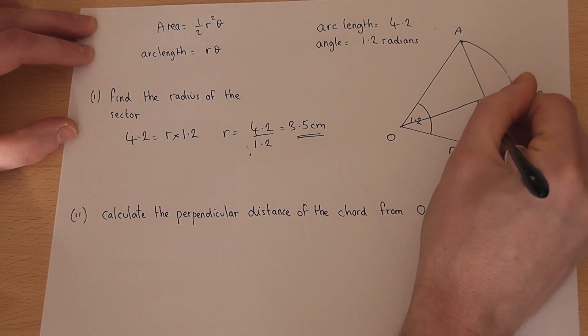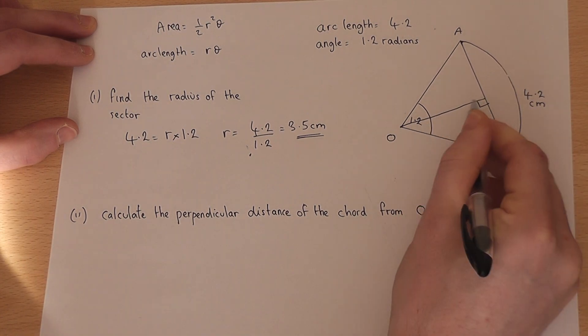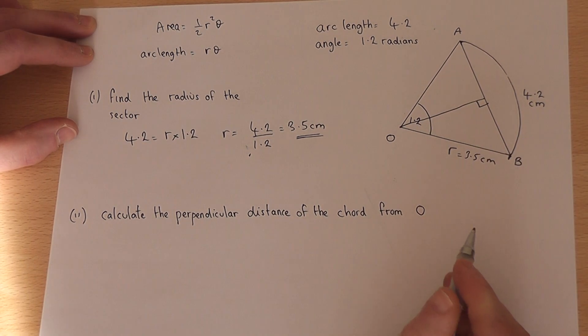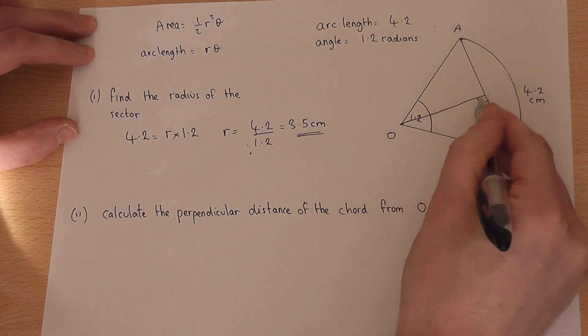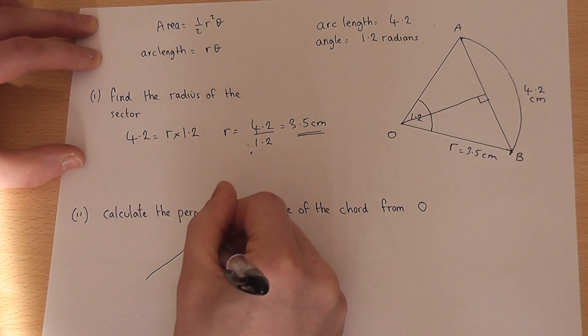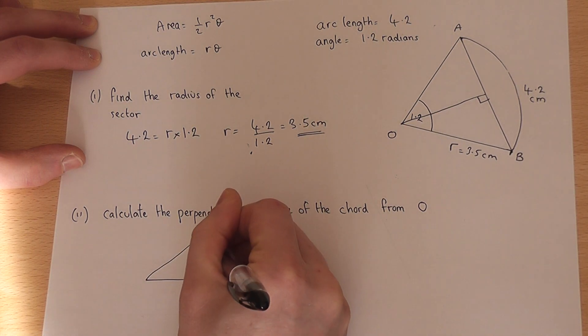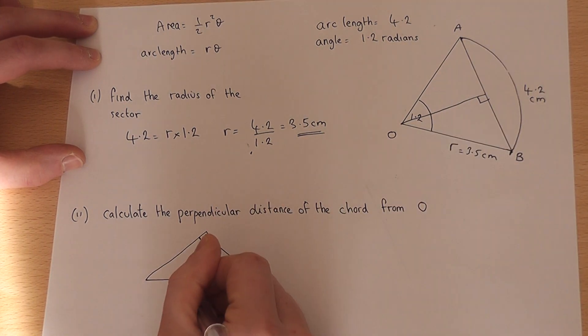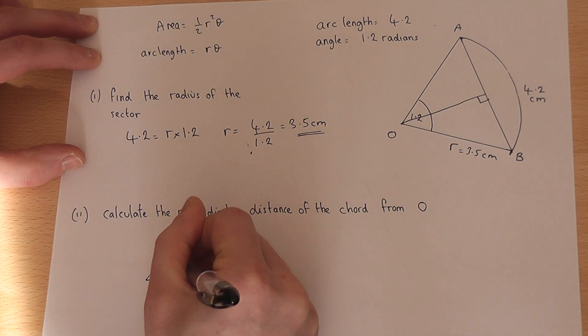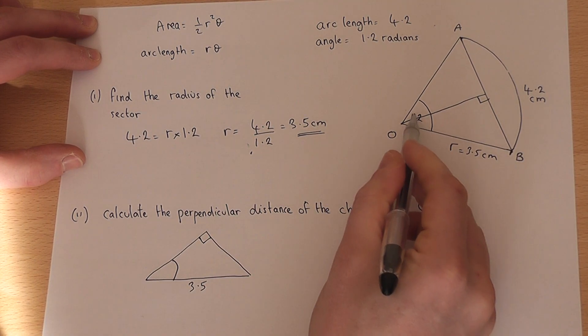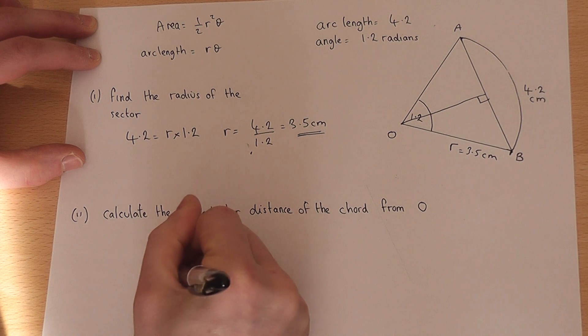then the question wants us to find this distance here. If I were to sketch this out again, then we've got a right-angled triangle. We know r is 3.5. We know the angle will be a half of 1.2, which is 0.6.